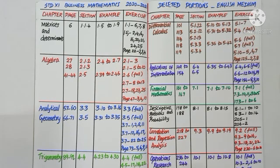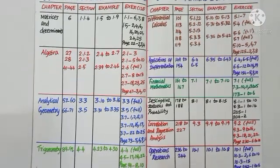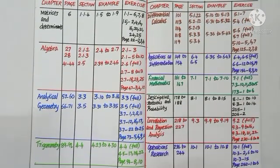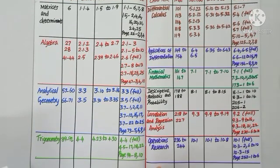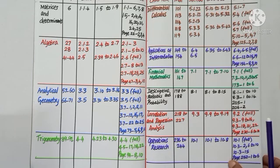Chapter 4: Trigonometry. Inverse trigonometry functions alone is deleted. Page numbers 89 to 92, section 4.4 is deleted. Examples 4.23 to 4.30, and in exercise 4.5, question numbers 17, 18, and 22 are deleted. In miscellaneous problems under Chapter 4, page number 94, question numbers 8 and 10 are deleted.